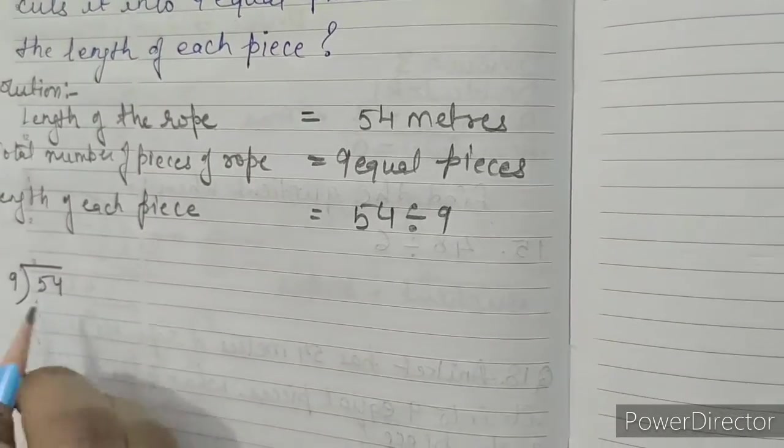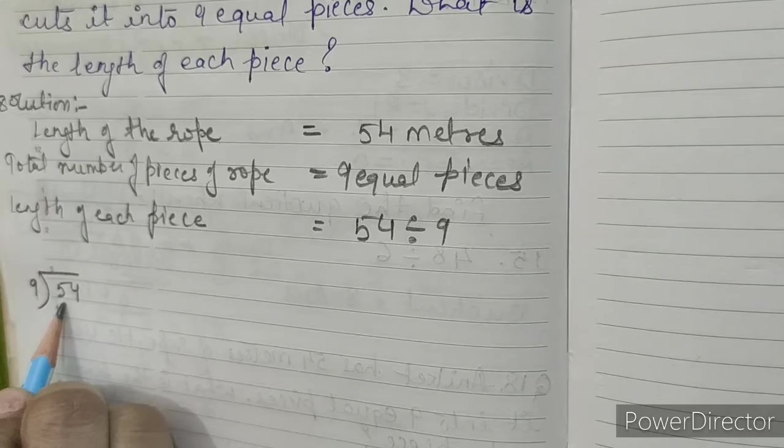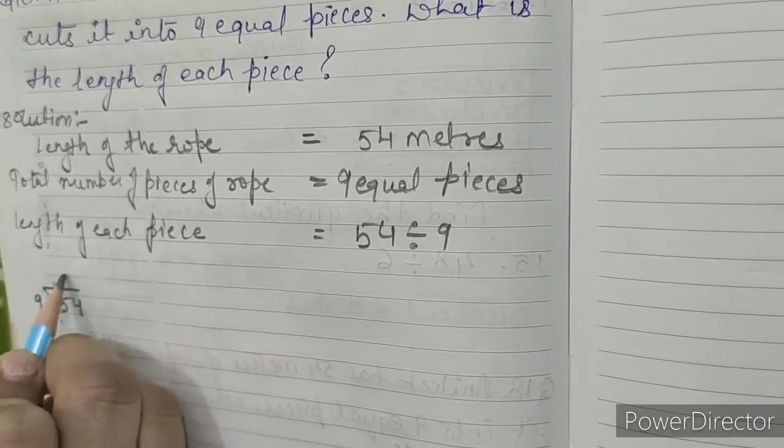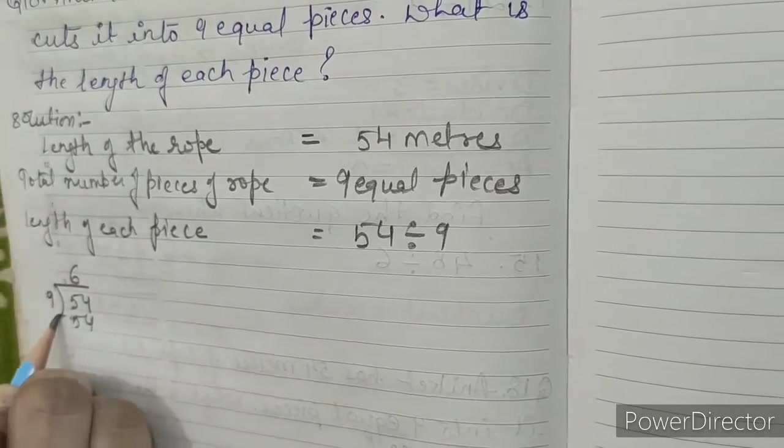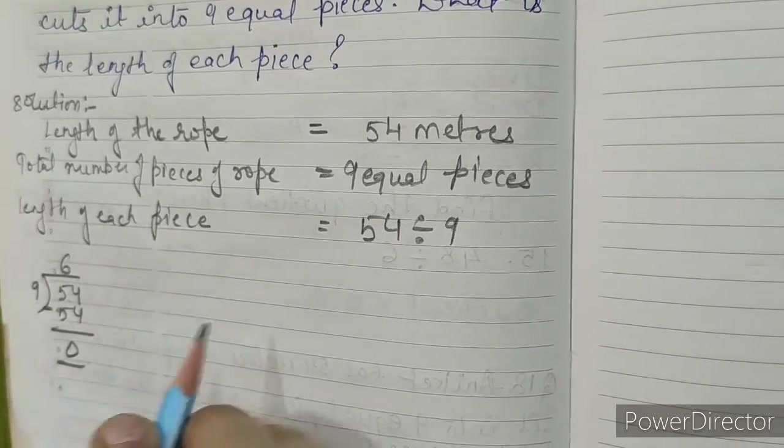54 divided by 9: 9 is the divisor, 54 is the dividend. So 9 sixes are 54. 54 minus 54 is 0.